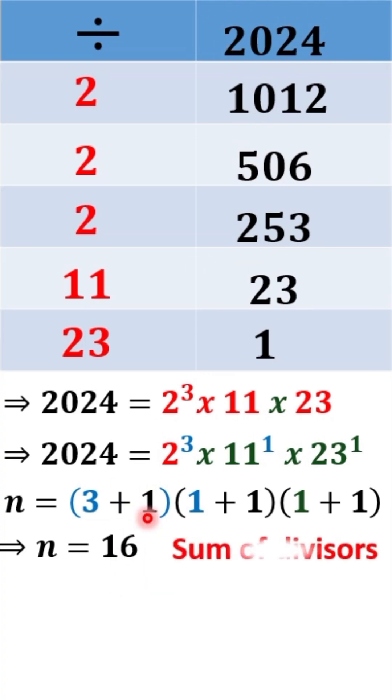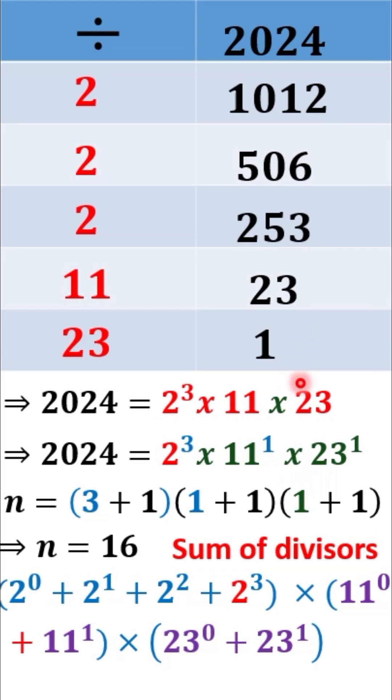To get the sum of divisors, we're going to take each of our prime factors. We take 2 to the power 3. We start with 2 to the power 0 plus 2 to the power 1 plus 2 to the power 2 plus 2 to the power 3. We do the same for 11,